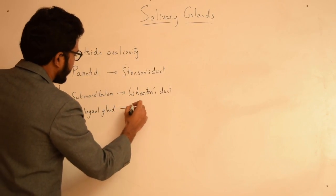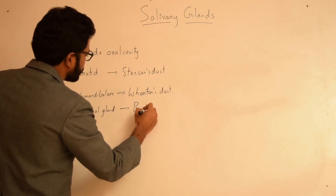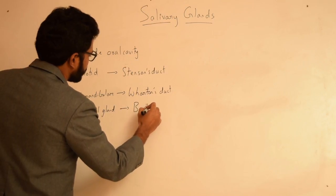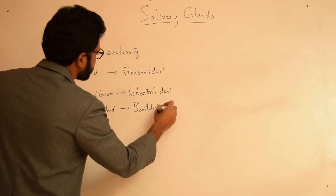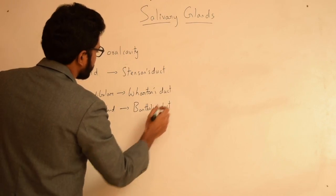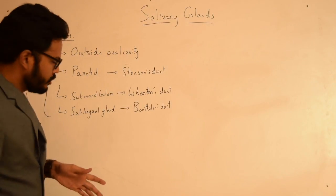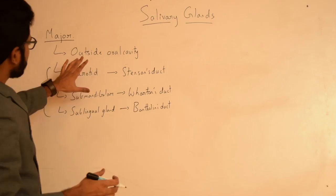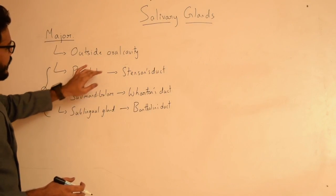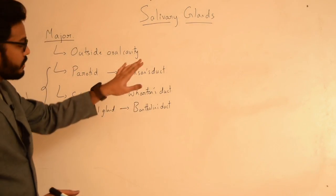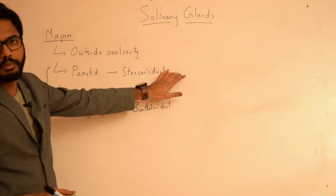And the sublingual gland opens through Bartholin's duct near the opening of Wharton's duct. So these are the three major salivary glands and their associated ducts, and the opening of these ducts is also very important to keep in mind.